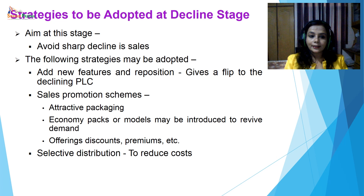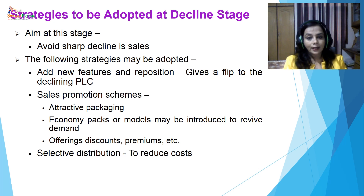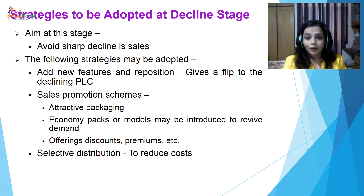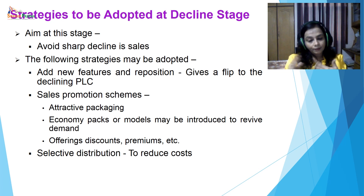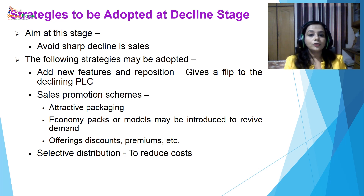Strategies to be adopted at the decline stage: the aim is to avoid sharp decline in sales. New features are added and repositioning is done to give a boost to the declining product lifecycle curve. The packaging may be made more attractive. Economy packs or models may be introduced to revive demand. Selective distribution may be adopted to reduce the cost. The idea is to prolong the product's life, add new features and reposition it so customers stick to your product, while also trying to reduce the cost so that some profits keep coming.